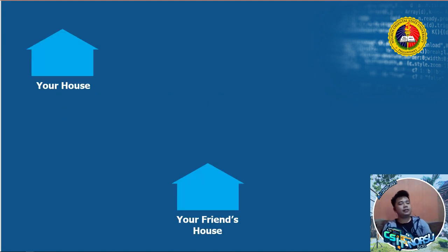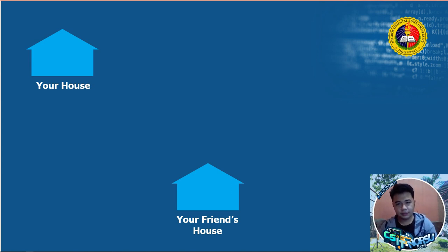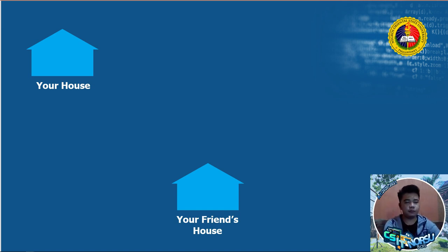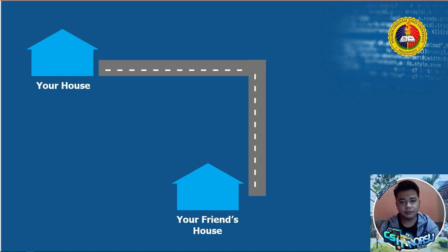Think of it this way: your house and your friend's house connected by a road — that road is like the Internet. Now, how are you going to visit your friend's house? You can either walk, skate, bike, or ride a bus depending on the distance. The skateboard, the bike, and the bus — the mode of transportation — is comparable to the World Wide Web. So using two computers: if two computers are connected using any network medium, we already have a network — or an Internet. How we transmit data from one computer to another using HTTP requests is the World Wide Web.